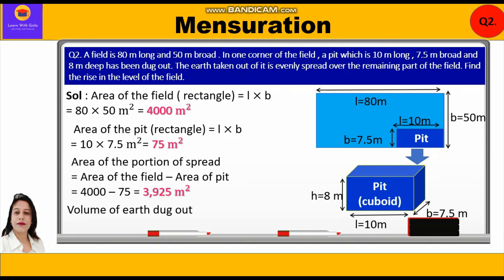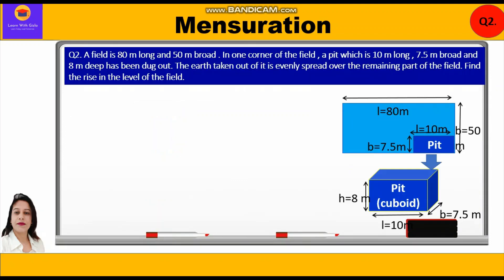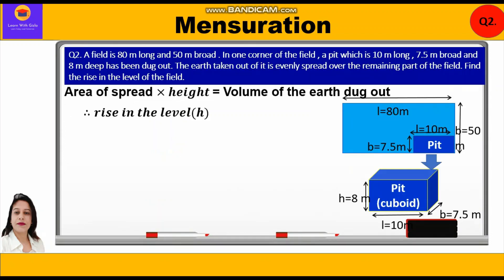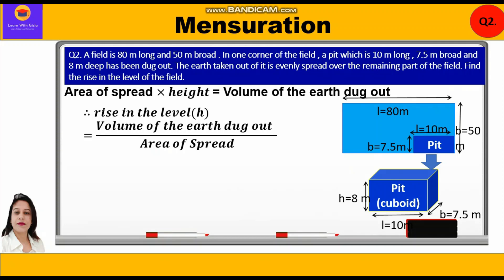The volume of the earth dug out from the pit, which is cuboid in shape, is length × breadth × height = 10 × 7.5 × 8 = 600 m³. We now have the area of the portion over which the earth is spread (3925 m²) and the volume of earth dug out (600 m³). The rise in the level of the field is: volume of earth dug out ÷ area of spread = 600 ÷ 3925 meters.